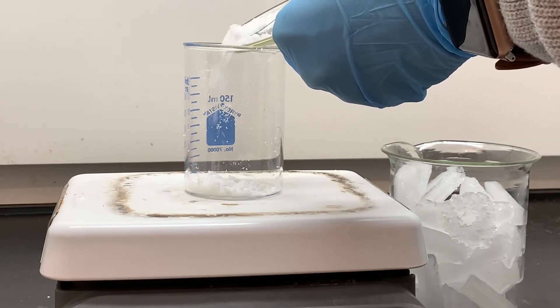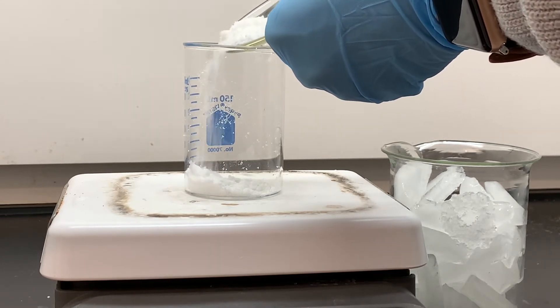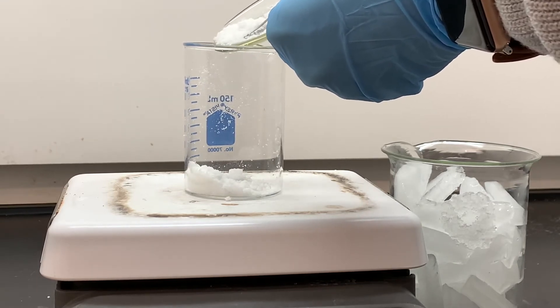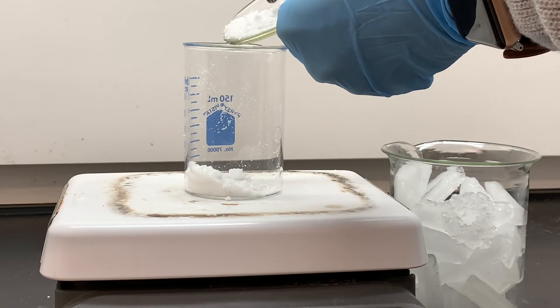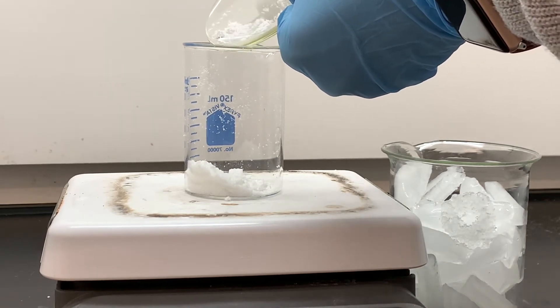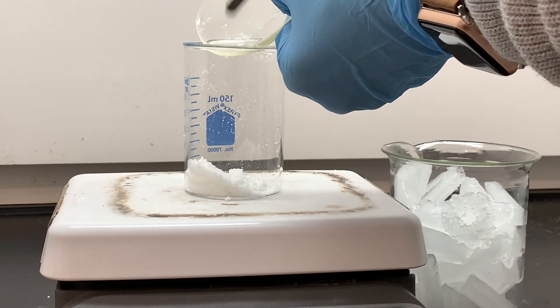We're going to be transferring it into this beaker, and we're going to be heating it very gently on the hot plate. It's really important that we work at a low heat so that we don't char or burn any of this camphor. We just want it to heat up into a gas, sublime.